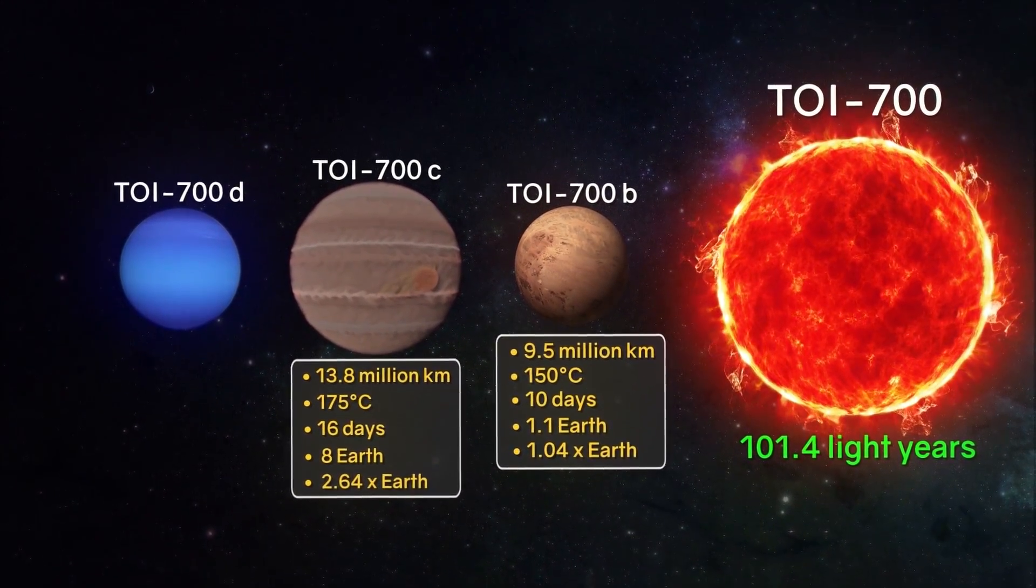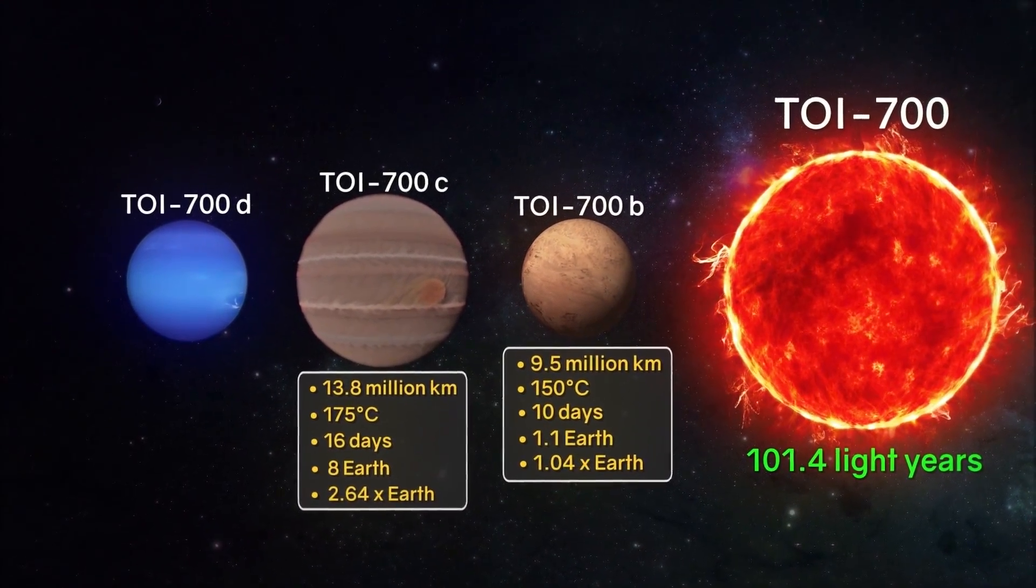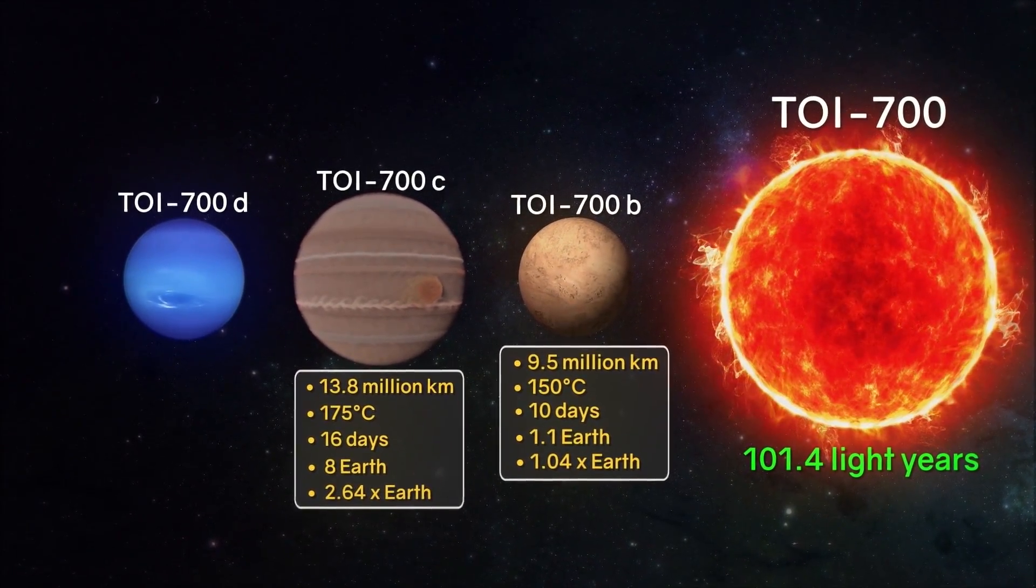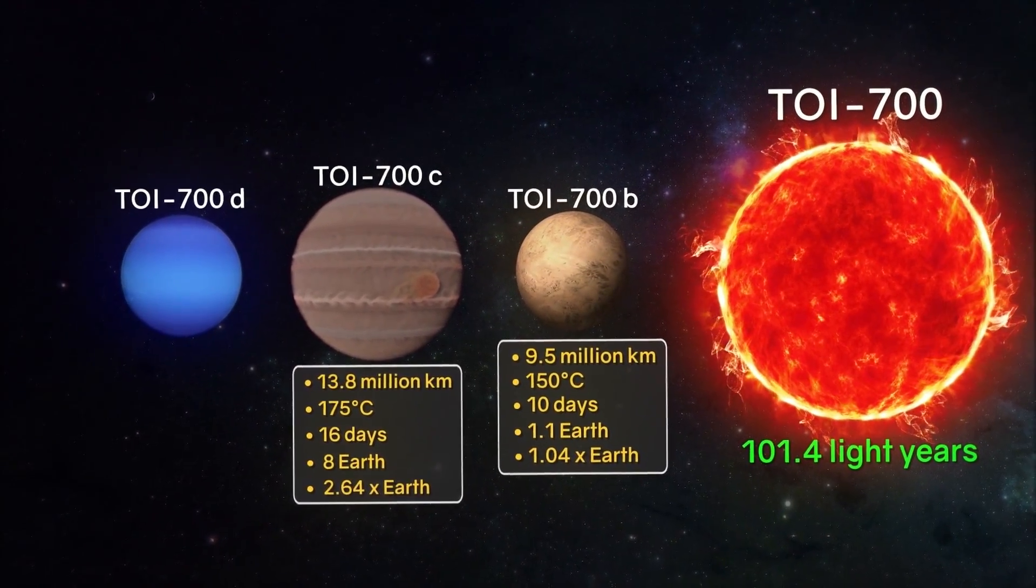This planet, with its temperature of 75 degrees Celsius, could be considered habitable. But gravity is 8 times greater than the Earth's, which doesn't leave any chance. Of greatest interest is the third planet, TOI 700d. By the way, note that the Earth is also the third planet from the Sun.